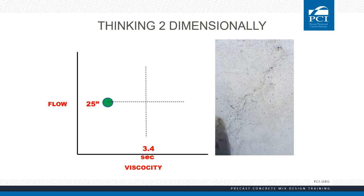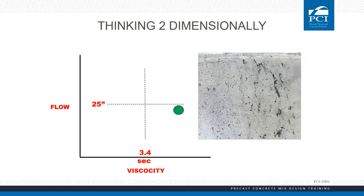Here we see an increase in viscosity and a slight decrease of flow, resulting in extreme bug holes. These bug holes are more often a result of excessively high viscosity. What can cause it? A change of cement — perhaps variation in alkali or blank fineness, or even temperature of the cement. Or an increase in aggregate material retained on the number 30 and number 50 sieve — spikes on the 30 and 50 sieve in our sand. These two sieve sizes tend to affect viscosity in concrete more than any of the others.